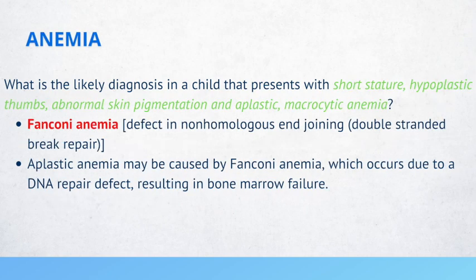What is the likely diagnosis in a child that presents with short stature, hypoplastic thumbs, abnormal skin pigmentation, and aplastic macrocytic anemia? Fanconi's anemia. This is due to a defect in non-homologous end joining or double-stranded break repair. Aplastic anemia may be caused by Fanconi's anemia, which occurs due to a DNA repair defect resulting in bone marrow failure.